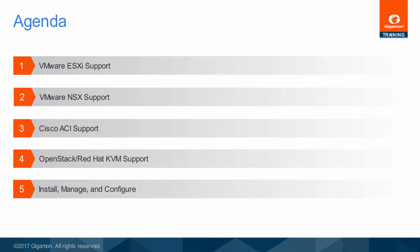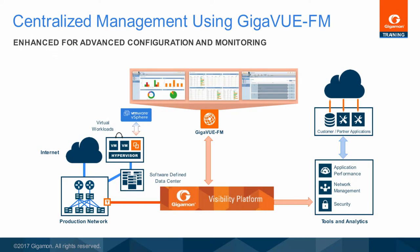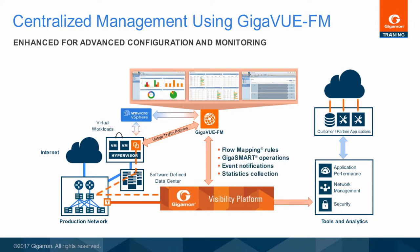The GigaView VM virtual node is a native virtual machine that extends pervasive visibility for monitoring, analysis, and security tools into VMware. Fabric Manager learns the virtual ESXi environment by inventorying the vCenters it will be working with. Referencing that inventory of hypervisors and installed workload, Fabric Manager is quickly provisioned to deploy GigaView VM as a guest OS on each hypervisor where virtual traffic is sought. Through a simplified user interface, various traffic access policies are created by selecting guest workload from a list and identifying which traffic is required. Fabric Manager pushes policies out to the appropriate GigaView VM instance, which then selects traffic from inside the hypervisor and forwards it out to a physical GigaView node, where that traffic is made available to all interested monitoring and security tools.